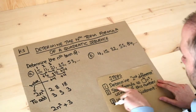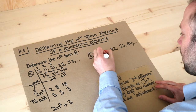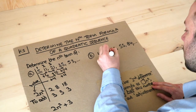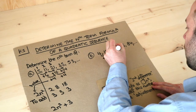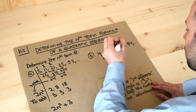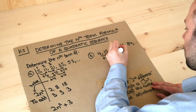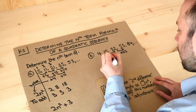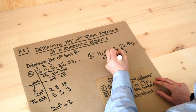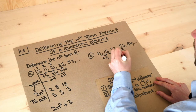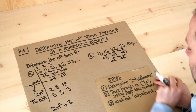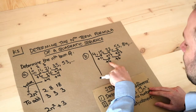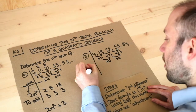Now let's look at the next example. The first difference is 11, then 17, then 23. The difference of the difference — the second difference — is 6 each time, so we have a second difference of 6. It is a quadratic sequence.